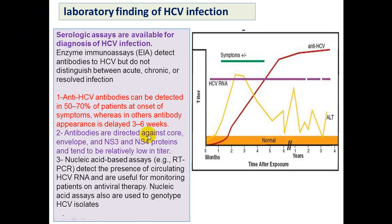These antibodies are directed against core protein, envelope 1, non-structural 3, and non-structural 4 proteins, and tend to be relatively low in titer — meaning low concentration.